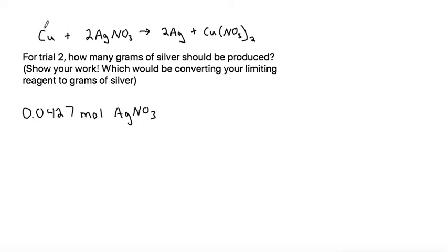All right, so here we have a problem that has a reaction that's given and has already been balanced. The question says: for trial 2, how many grams of silver should be produced? Show your work, which would be converting your limiting reagent to grams of silver.